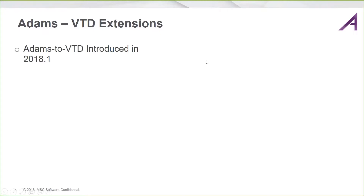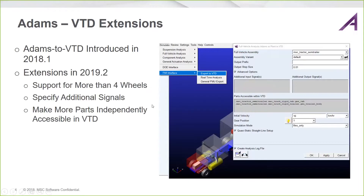In this release, we've added some nice extensions here in 2019.2. We're now able to support more than four wheels, which is good for heavy vehicles with multiple axles and dual wheels. We're also able to specify additional input signals before exporting the Adams model for use in VTD. Standardly, the Adams model is provided steering, throttle, brake, and gear from VTD, but we can now assign other input signals as well.